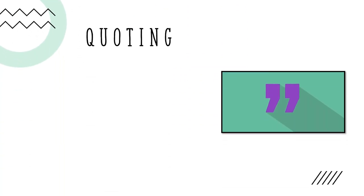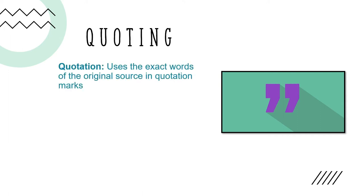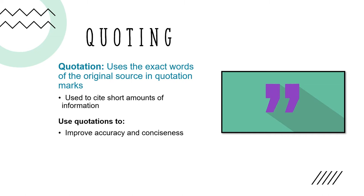The last method for using sources is quoting. A quotation uses the exact words of the original source and puts them in quotation marks. Quotations are used when you want to cite a short amount of information from the source. You should use quotations to improve accuracy and conciseness — when paraphrasing or summarizing cannot be done without changing the author's intent or you're unable to capture the meaning concisely, use quotations instead. You can also use quotations to provide authority for your argument. Using a quotation from a subject matter expert can serve as strong support for a claim that you're making.